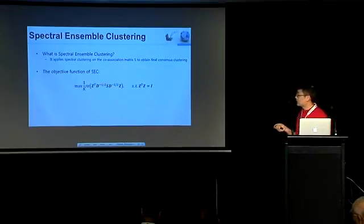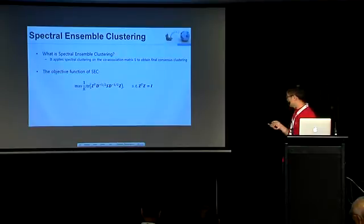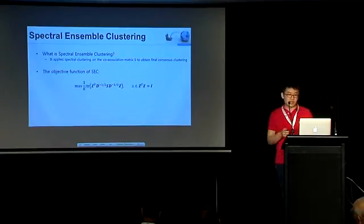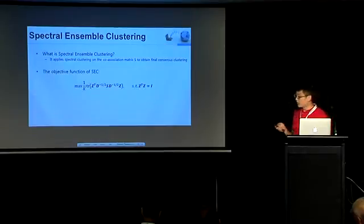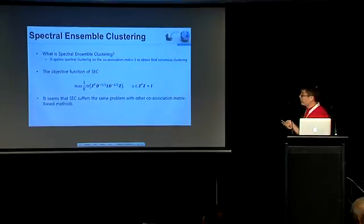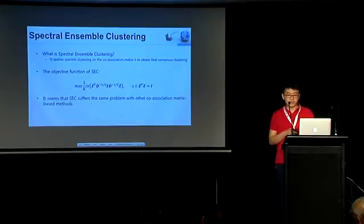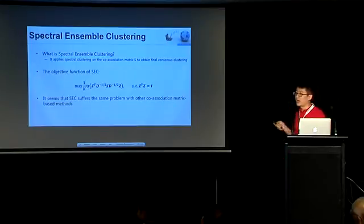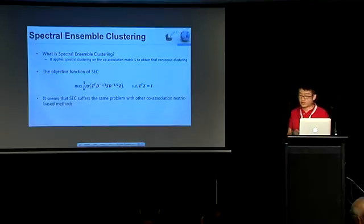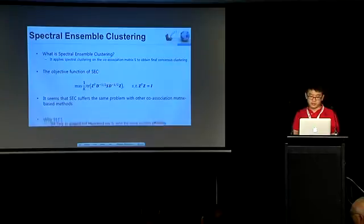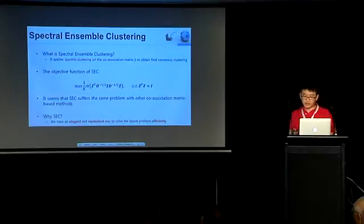Where S is a co-association matrix, and D is a diagonal matrix by summing the rows of S. It seems that, at first glance, SEC suffers the same problem with the traditional co-association matrix-based method. For example, the high space and time complexities, and do not have explicit utility function. Then, if so, why we propose SEC? Fortunately, we can show that SEC can be solved very efficiently in an elegant transform.